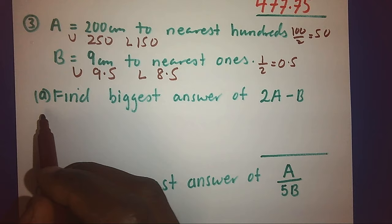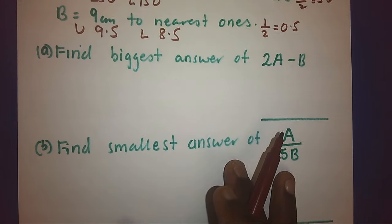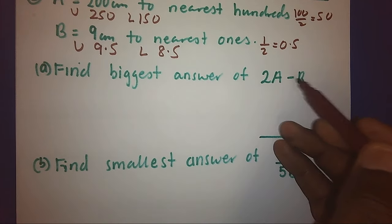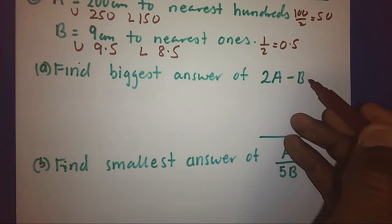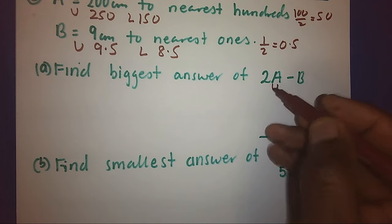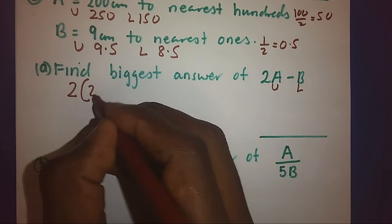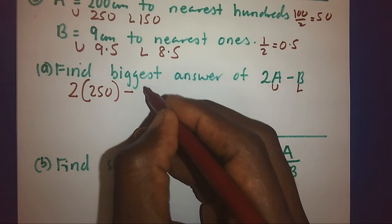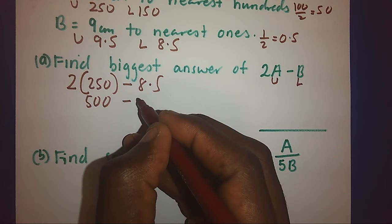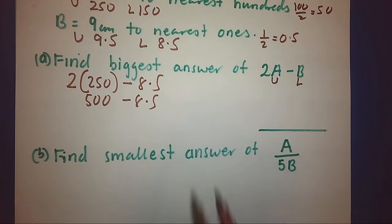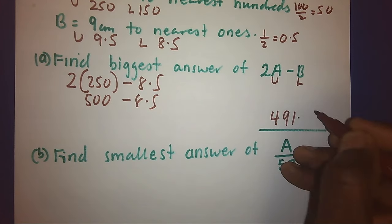Part A: find the biggest answer of 2A minus B. We are looking for the biggest answer, and we have A minus B. For the biggest answer, A takes the upper bound and B takes the lower bound. So this will mean 2 times 250 minus 8.5: 500 minus 8.5 = 491.5.